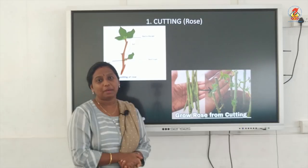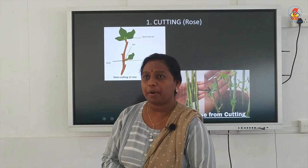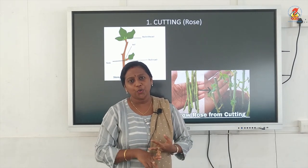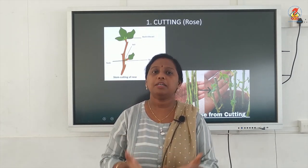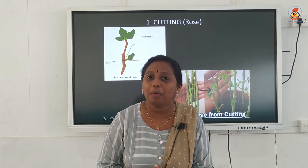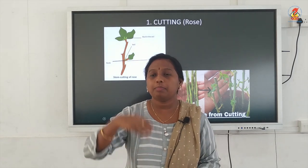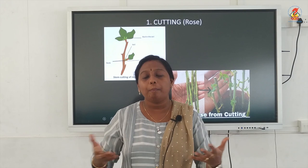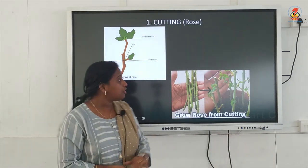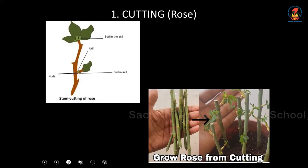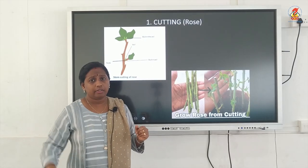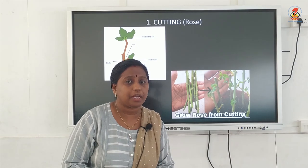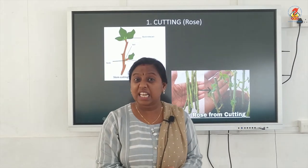The first type of vegetative propagation method is cutting. Cutting can be observed in plants like roses, money plant, etc. You take small pieces of stem and plant them directly in soil or in some growing media. The stem is going to develop new branches and grow into a new plant. From the base of the stem, new roots will develop; from the above portion, new leaves and branches will develop. When taking a cutting, make sure it has at least one node in it.